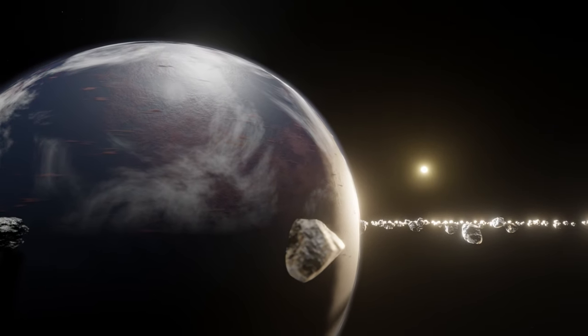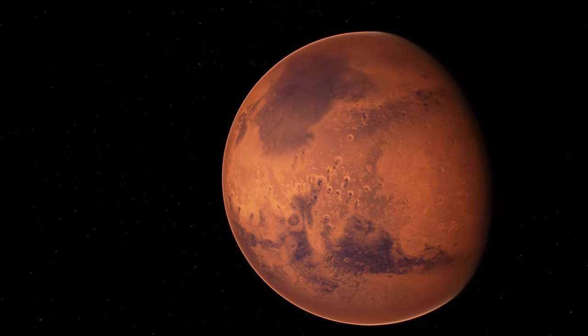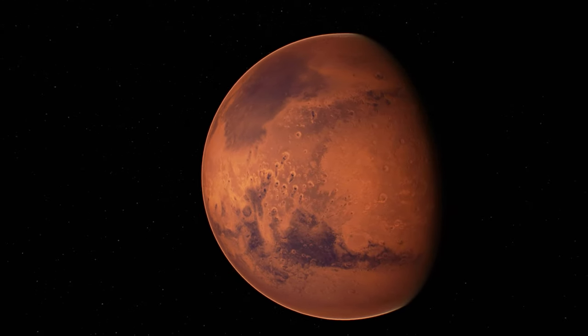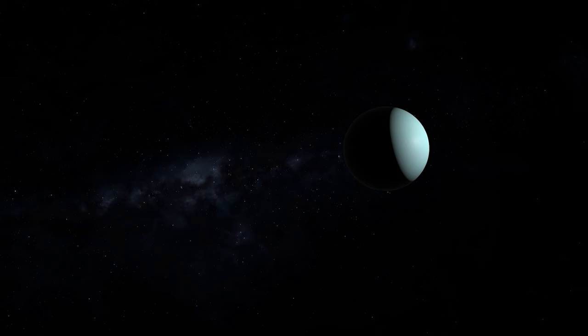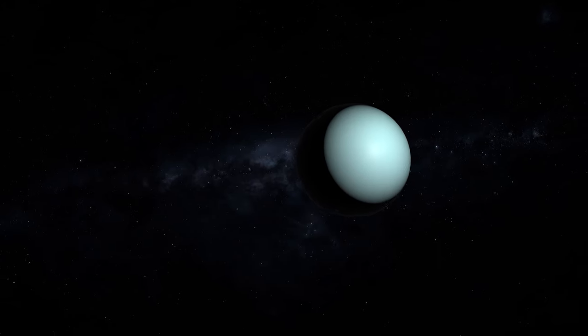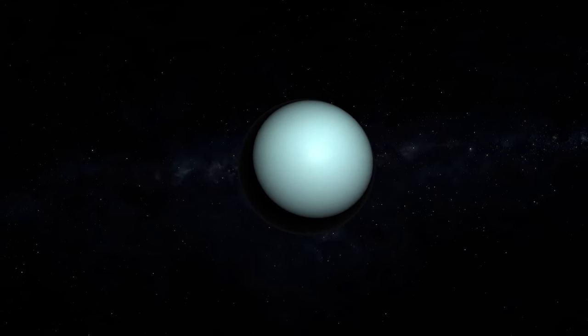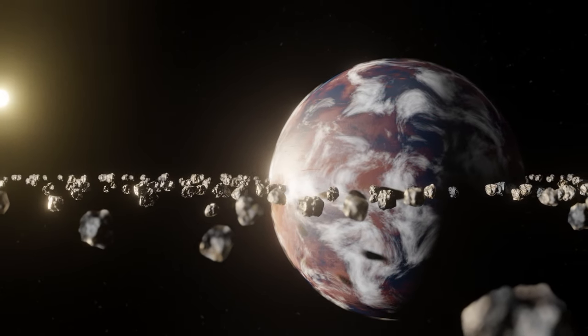There's also a possibility that life, at least in some primitive form, might exist on these worlds. If a planet was ejected from its system with a thick atmosphere and enough internal heat, it could provide the necessary conditions for life to persist. Rogue planets, given their solitary nature, are difficult to detect. They don't emit their own light, and without a nearby star, they don't reflect light either.